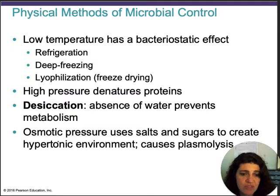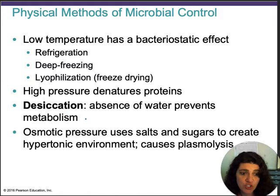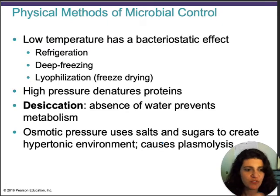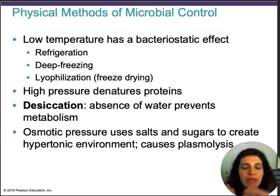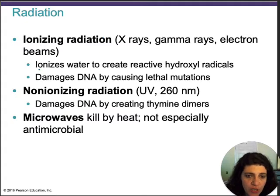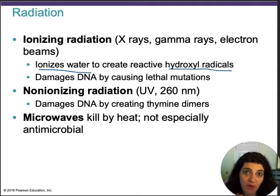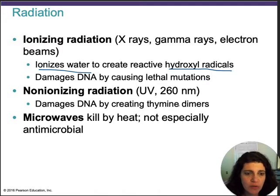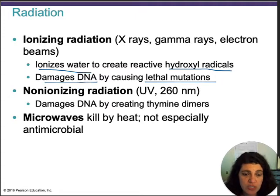Another physical method is osmotic pressure — you add sugars or salt to prevent some bacteria from growing because they dehydrate. Desiccation: when there is no water present, like the silica packets found in medicine flasks, avoiding moisture also prevents microbes from growing. Ionizing radiation is more efficient but more dangerous — it ionizes water to create hydroxyl radicals, which produce toxicity in the cell, damage compounds, and also damage DNA by causing lethal mutations.